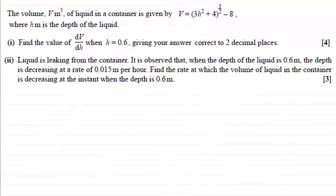Hi, now in this question we're told that the volume V cubic meters of liquid in a container is given by V equals (3h² + 4)^(3/2) - 8, where h meters is the depth of the liquid. In the first part of the question we've got to find the value of dV/dh when h equals 0.6, giving your answer correct to two decimal places.